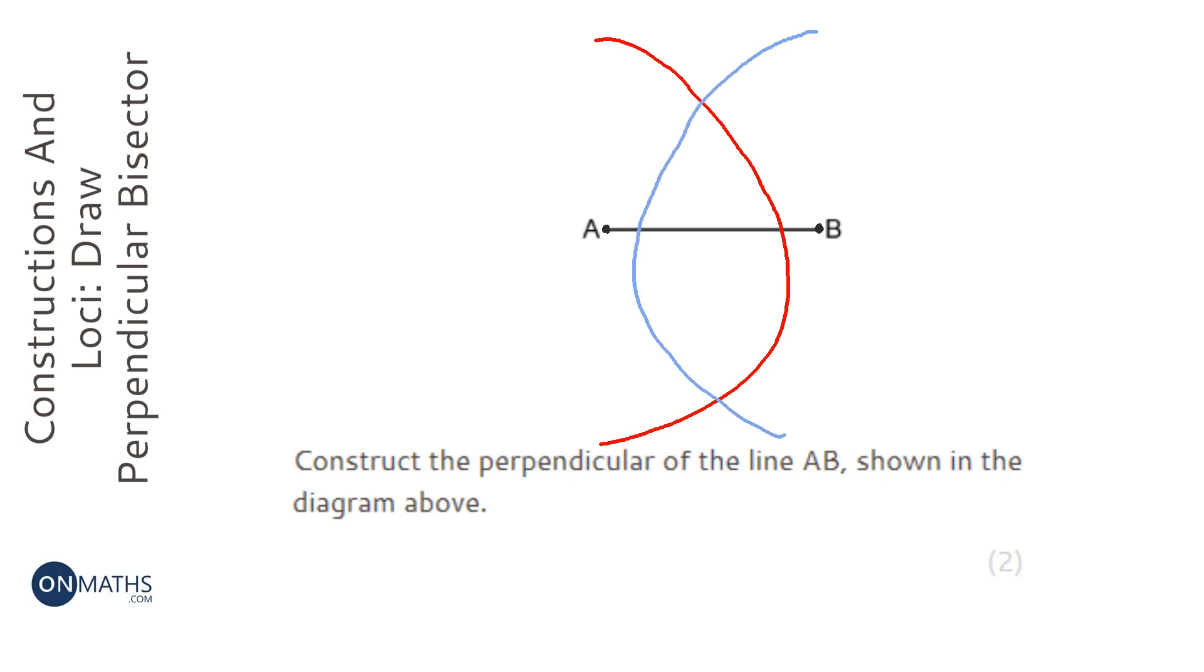Then what we need to do is draw a line that connects where the two arcs—one from A and one from B—touched each other. It won't look very convincing, but it should be something like this. If you did this properly with a compass, you'd get a perfect 90 degrees here.